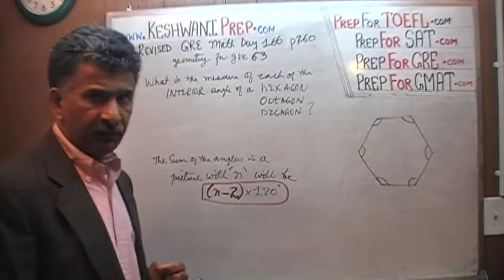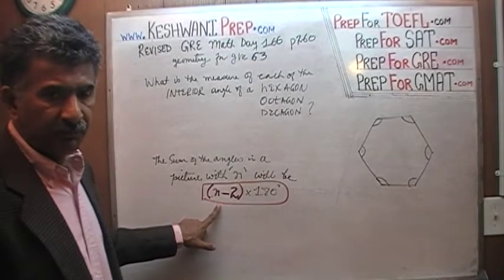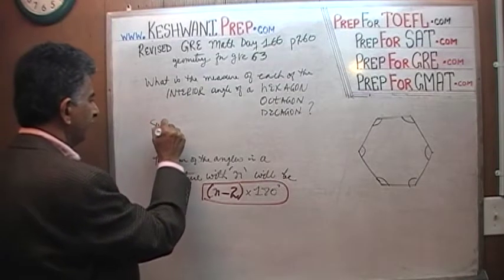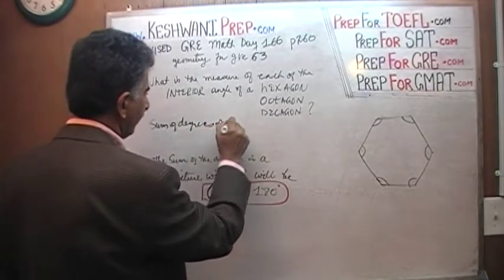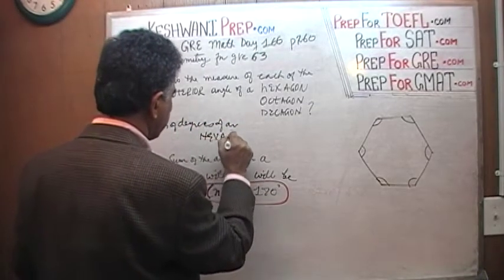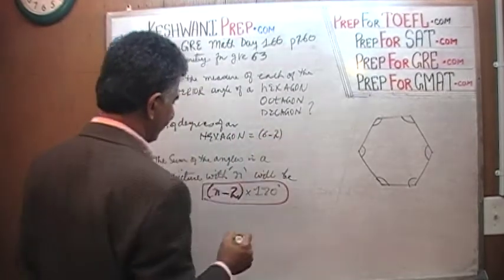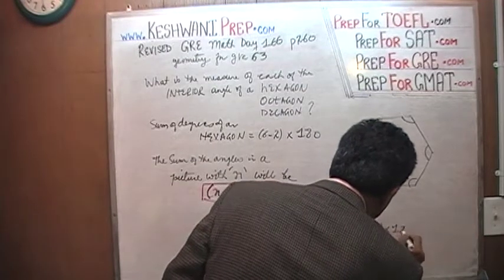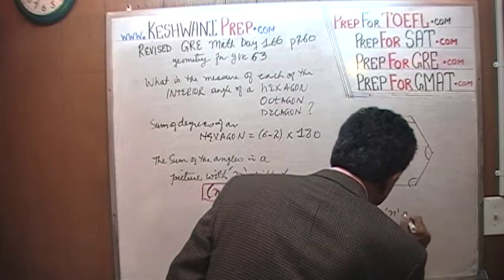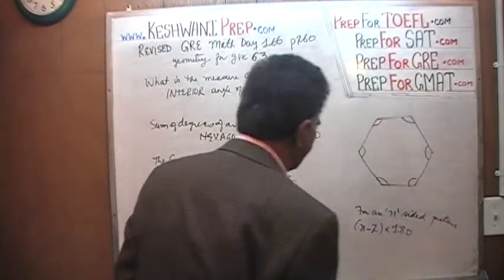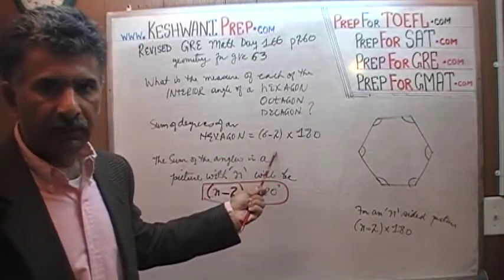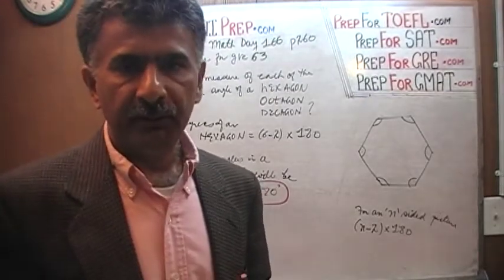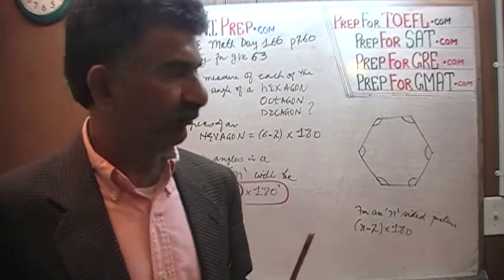Let's start with the hexagon. A hexagon, as you can clearly see, has six sides. Therefore, the sum of the interior angles of a hexagon is going to be (6 minus 2) times 180. So this equals 4 times 180. The next question we have to ask ourselves is: how many interior angles are there? A hexagon has six sides, and therefore those six sides will make six interior angles.